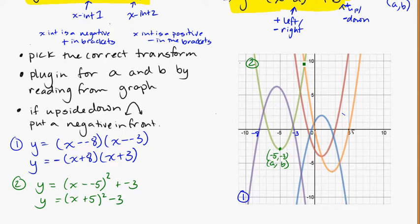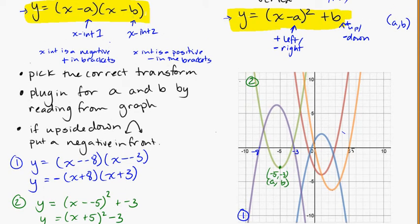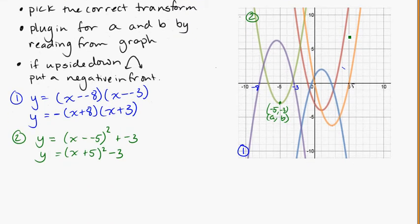Equals y and that one is right side up so no negative needed in front. And again the shortcut that you can start working towards is noticing that that went to the left 5 so I'm going to say positive 5 like I've said here left is positive. And it's gone down 3 so I can just jump straight to the negative 3 there but you can work to that as you get more comfortable with these basics.